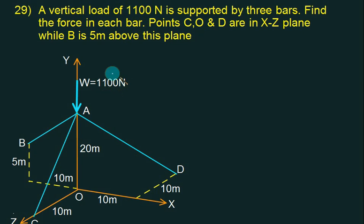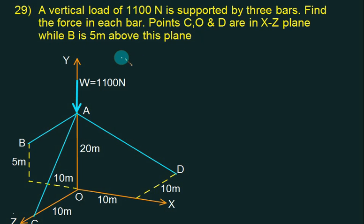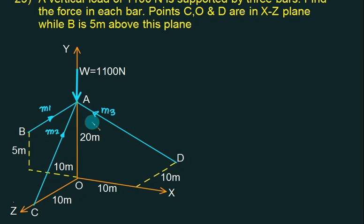A vertical load of 1100 newtons is acting downward. It is supported by three bars: bar AB, bar AC, and bar AD. Points C, O, and D are in the same plane, while B is 5 meters above this plane. Let m1, m2, m3 be the force multipliers in bars AB, AC, and AD respectively, and the corresponding forces are F1, F2, and F3.